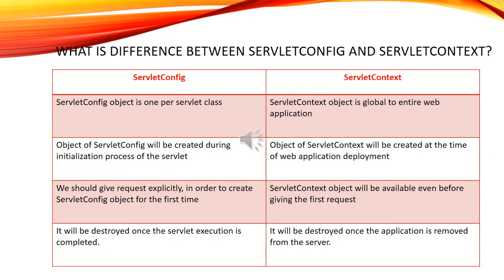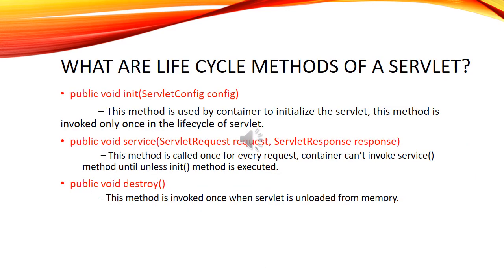What is the difference between servlet config and servlet context? Servlet config object is one per servlet class. Servlet context object is global to the entire web application. Servlet config object is created during the initialization process of the servlet. Servlet context is created at the time of web application deployment. We must give a request explicitly to create the servlet config object for the first time. Servlet context object is available even before the first request. Servlet config is destroyed once servlet execution is completed; servlet context is destroyed once the application is removed from the server.